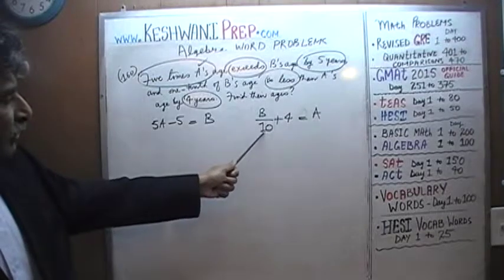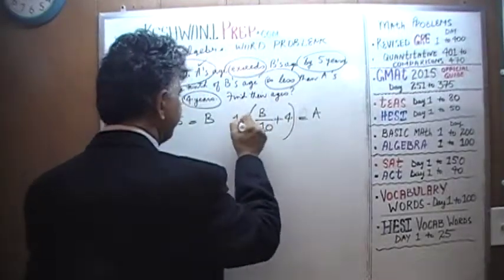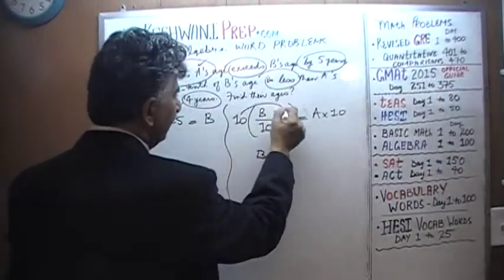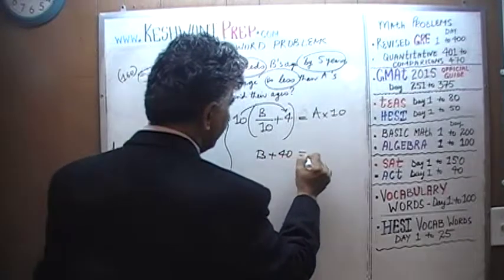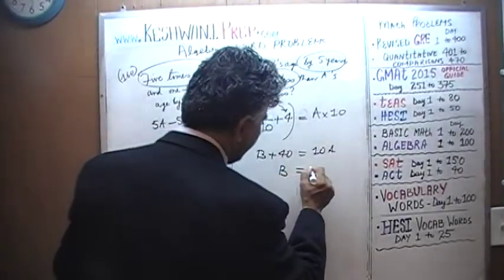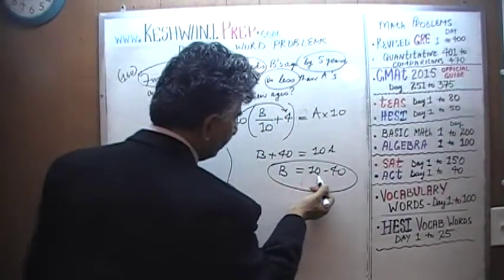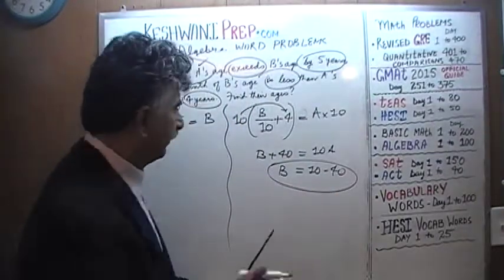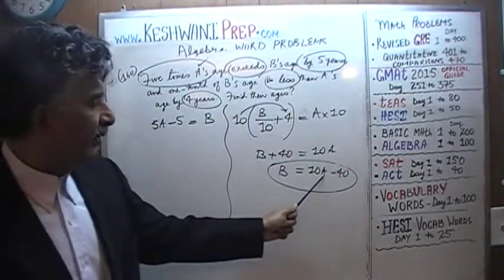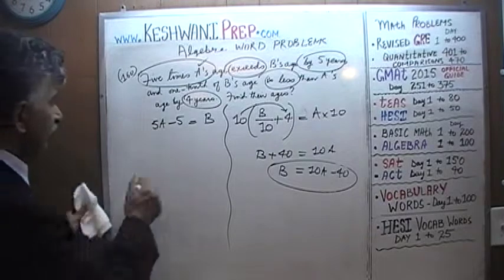The first thing we want to do is get rid of the 10 from the denominator — multiply both sides of the equation by 10. That gives us B plus 40 equals 10A. Subtract 40 from both sides, and we get B equals 10A minus 40. From the first equation, we also know B's age is 5A minus 5.